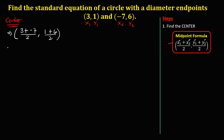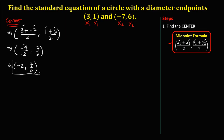Simplifying: 3 plus negative 7 equals negative 4, over 2. And 1 plus 6 equals 7, over 2. Then simplifying further: negative 4 divided by 2 is negative 2, and 7 divided by 2 stays as 7 over 2. So the center of the circle is (-2, 7/2).